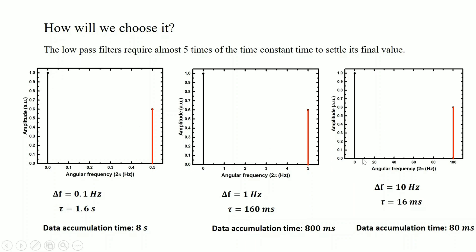Similarly, we can choose delta f equal to 10 Hz, giving a corresponding tau of 60 milliseconds and a data accumulation time of 80 milliseconds. We can still reject the noise without any problem. So, in these three different cases, we can choose the time constant wisely to reduce data accumulation time and overall experiment duration. We should have some prior knowledge about the noise in our system, and then choose the time constant in the lock-in amplifier accordingly to avoid unnecessary delays.